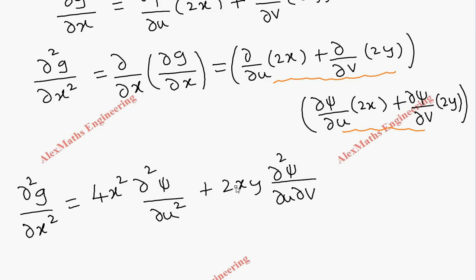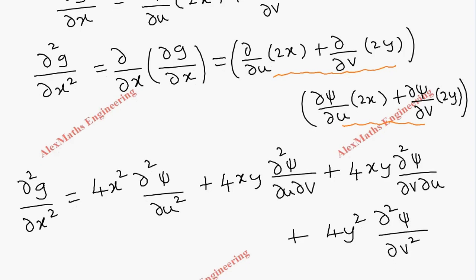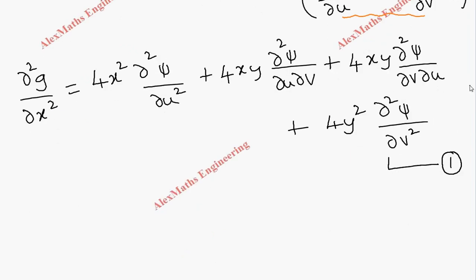Continuing the multiplication: the second term times the first term gives 4xy(∂²ψ/∂v∂u), and the last term gives 4y²(∂²ψ/∂v²). So Expression 1 for ∂²g/∂x² is: 4x²(∂²ψ/∂u²) + 4xy(∂²ψ/∂u∂v) + 4xy(∂²ψ/∂v∂u) + 4y²(∂²ψ/∂v²). Let's keep this as Expression 1.